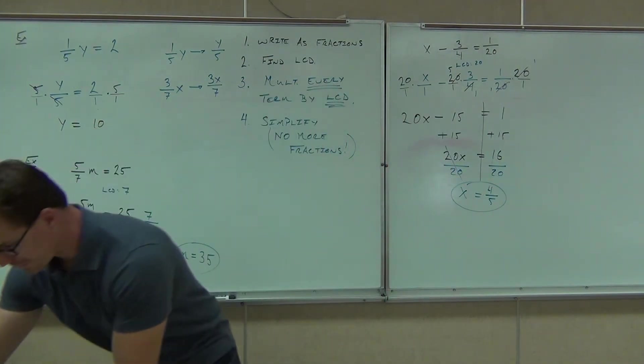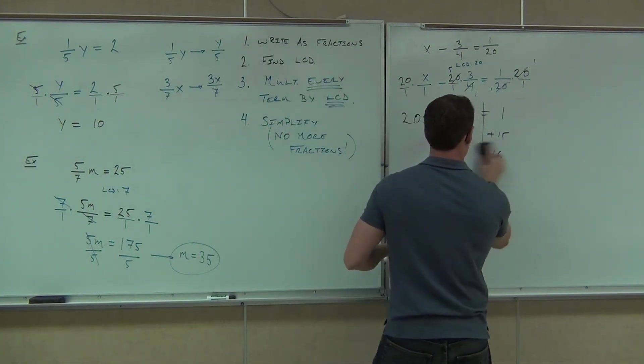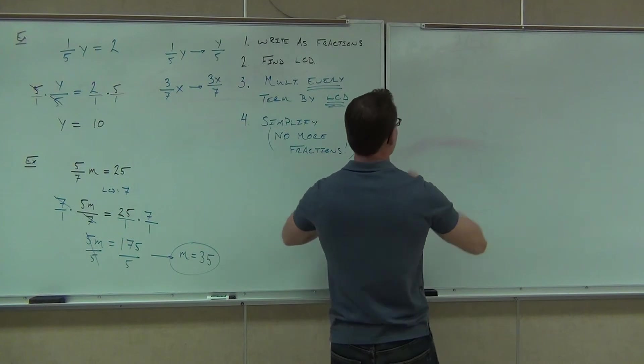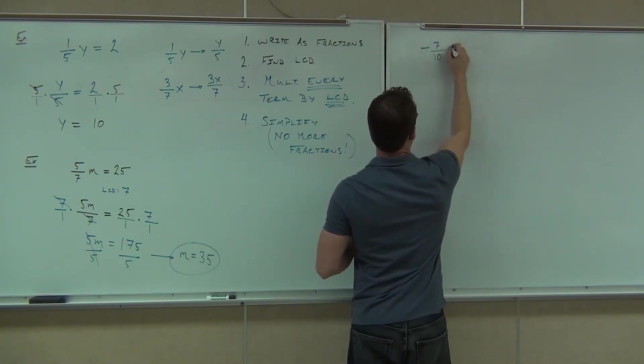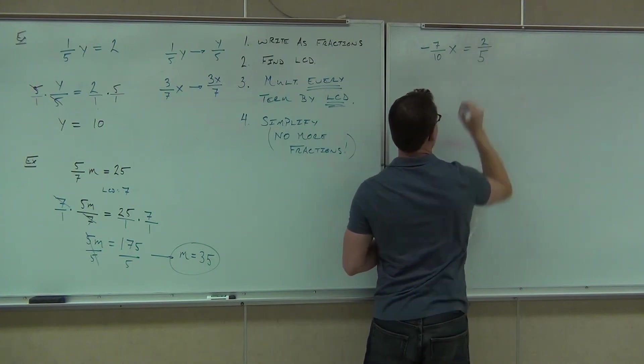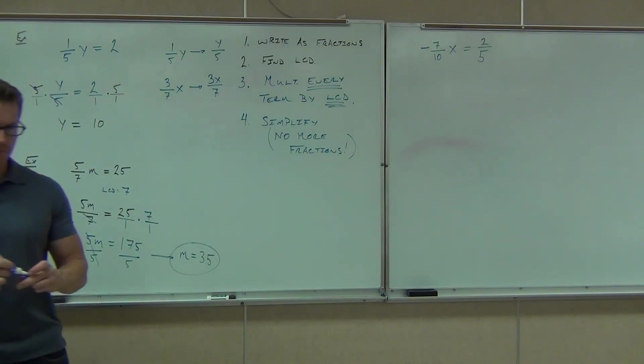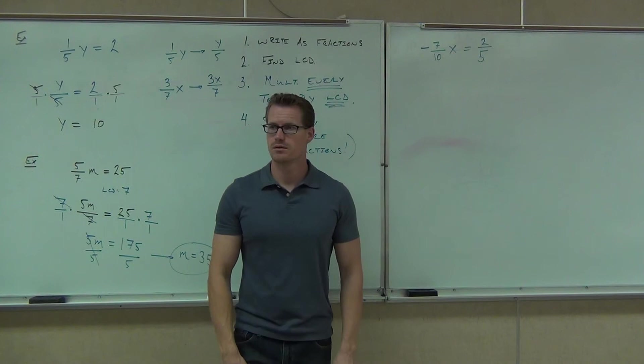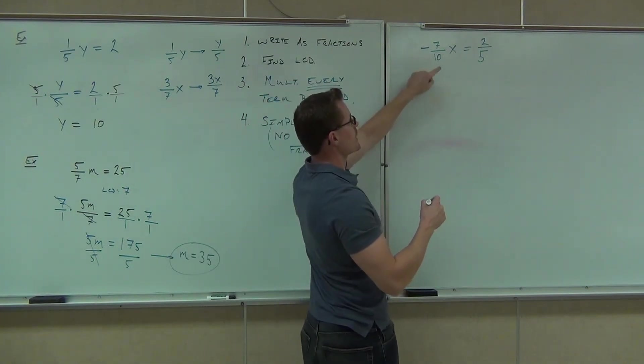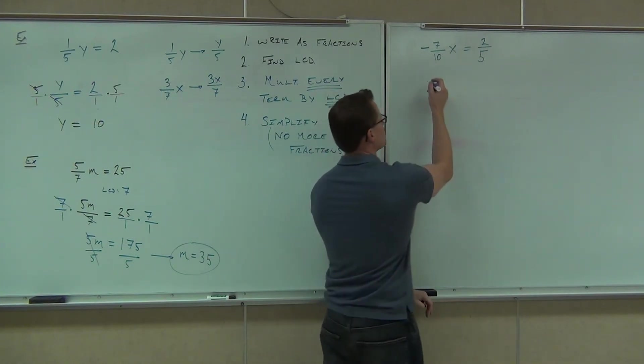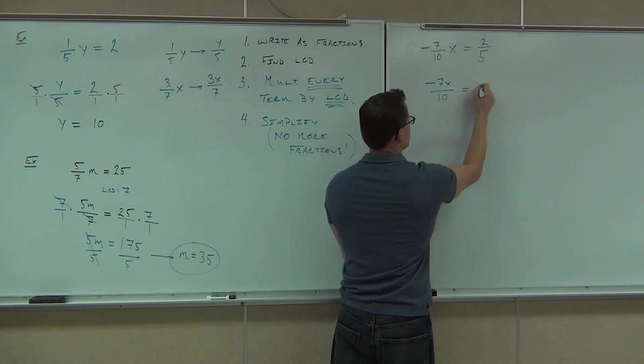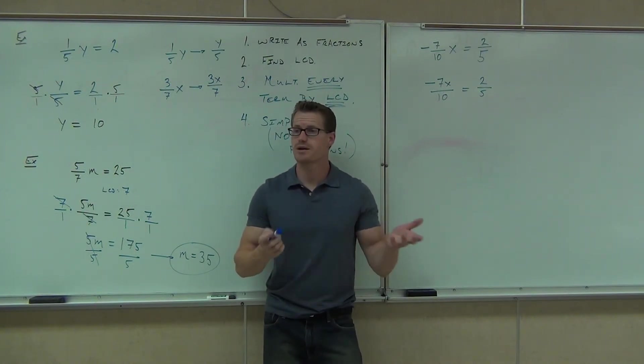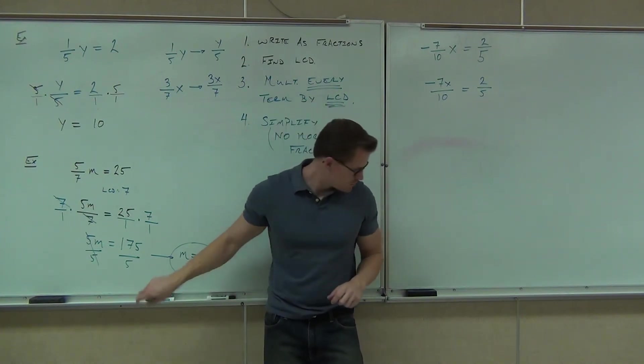We'll do one more together, and I'll give you some to do on your own. Let's try negative seven-tenths x equals two-fifths. Yeah, this one. But I'd like your help on the steps. I want you guys to kind of verbalize what we're supposed to do in this case. What's the first thing that we're supposed to do in this case? Put the negative and the variable on the top. Very good. So instead of having negative seven-tenths x, I'm going to have, can you read it to me? What am I going to have? Negative seven x over ten. Perfect. We automatically have two fractions. What's the next thing you might want to do here? LCD. Great. Let's find the LCD. How much is the LCD? Ten. Okay. That wasn't too bad.